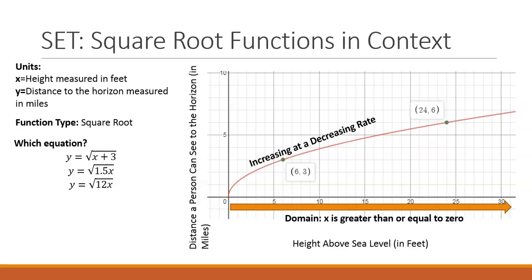We are then asked which one of these equations best represents this graph. One way to do this would be to pull up a table of values from the graph and substitute these values into each equation. The only function that would be true given x values of 0, 6, and 24 would be y equals the square root of 1.5x.